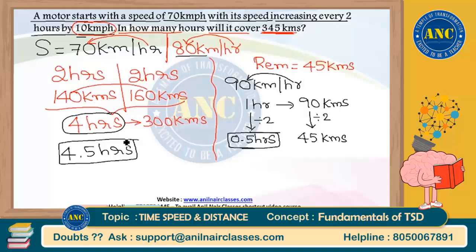In four and a half hours, 345 kilometers is completed, where speed increases by 10 kilometers per hour after every two hours. These are very easy questions to start with. We will slowly scale up the difficulty as we proceed with our classes. Do not worry — we will keep building the logic step by step and have a beautiful class over the next one and a half to two hours.